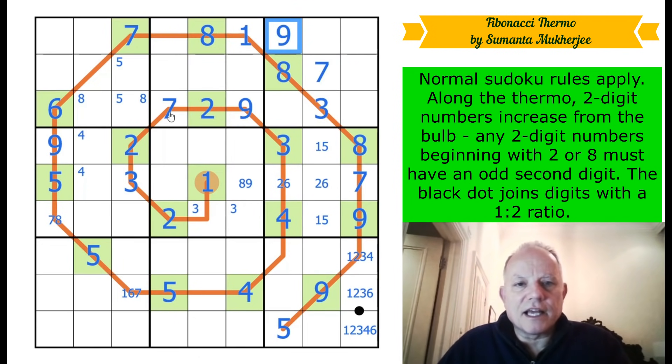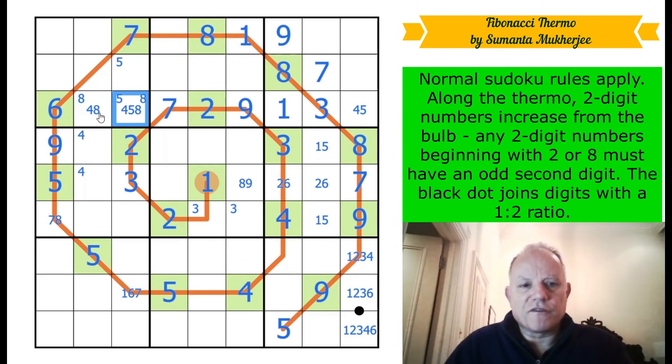So that can't be a seven or a nine. We can place seven and nine. There we go. Eight is there. Well, these are from, that is a naked single one. Four or five there. These are from four, eight, and four, five, eight. Seven, two, nine, eight, one.